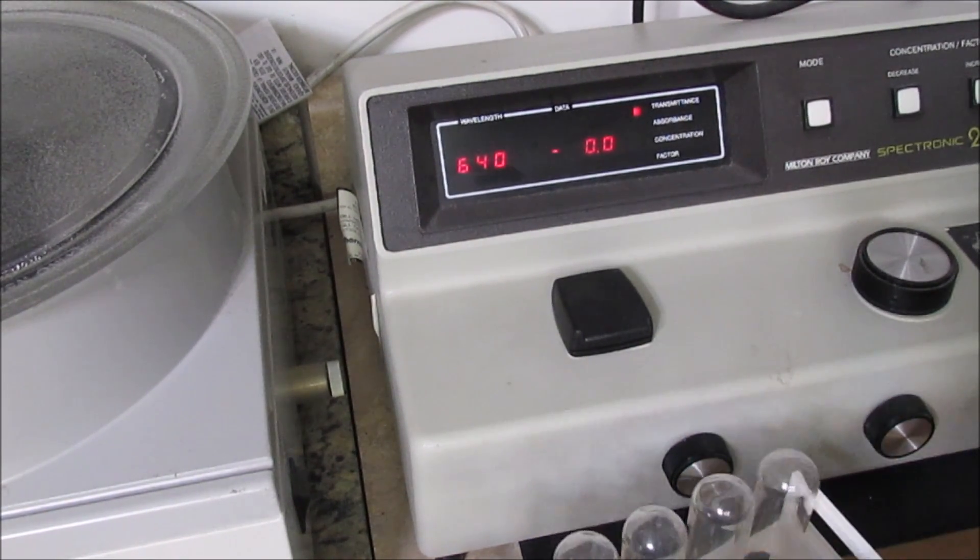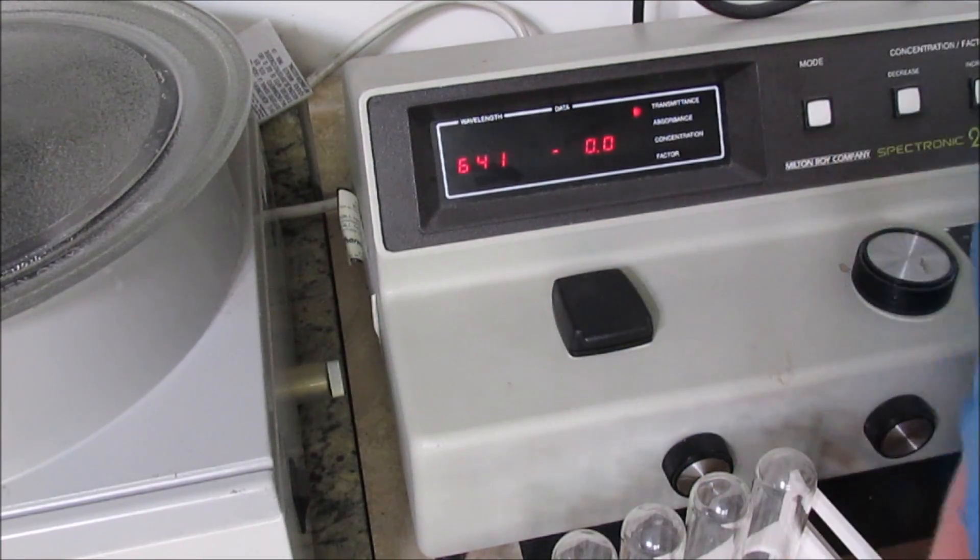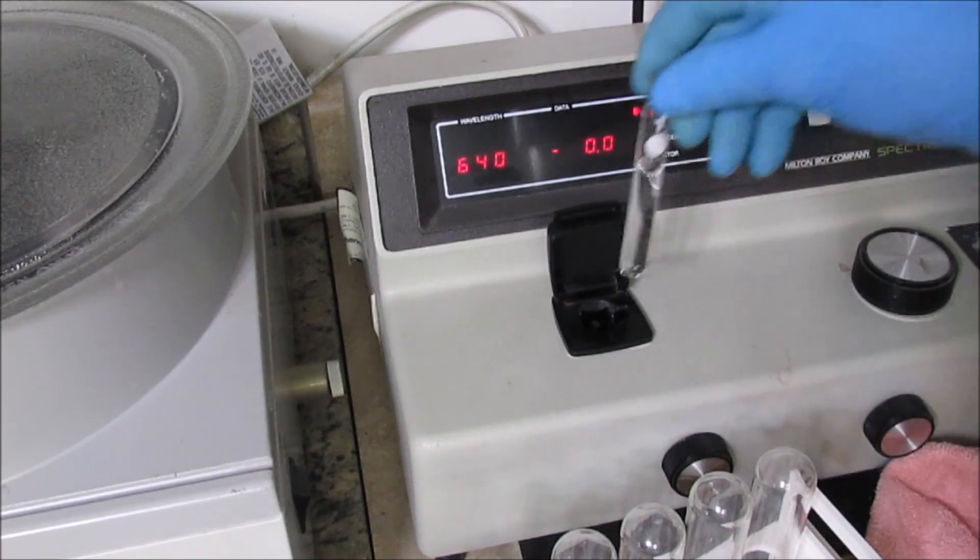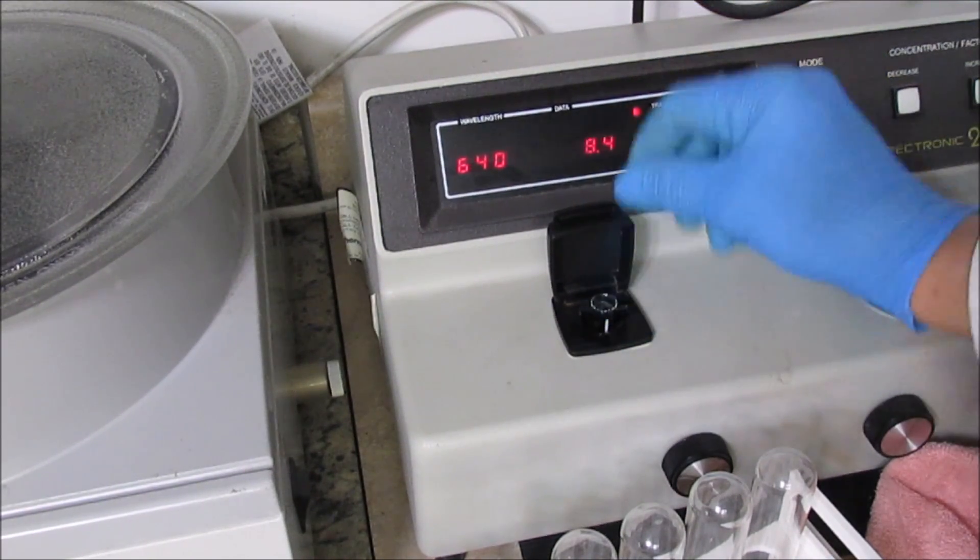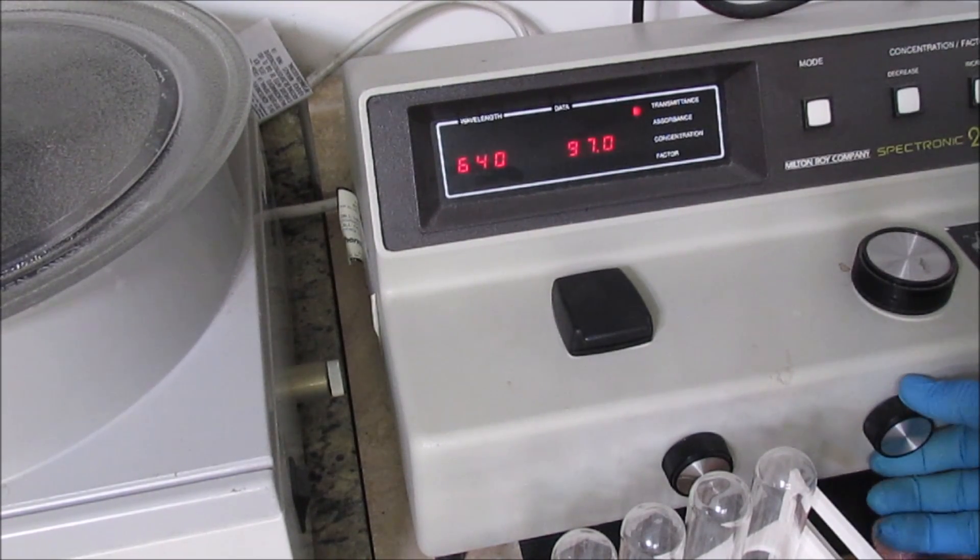Alright, now I take my blank sample and wipe it off real good, and insert it into the cavity here. Then I use this knob over here to adjust a full scale deflection up to 100.